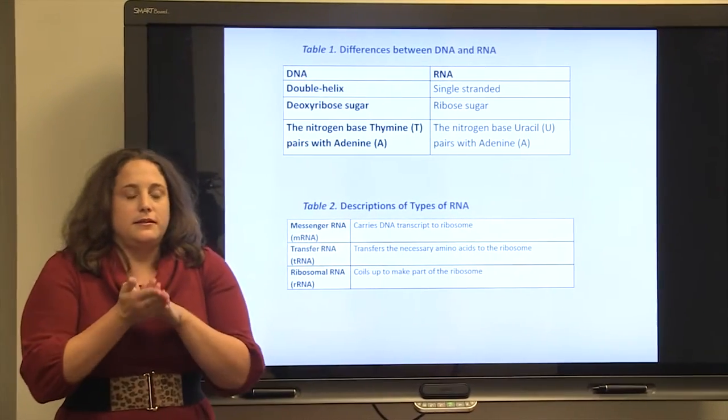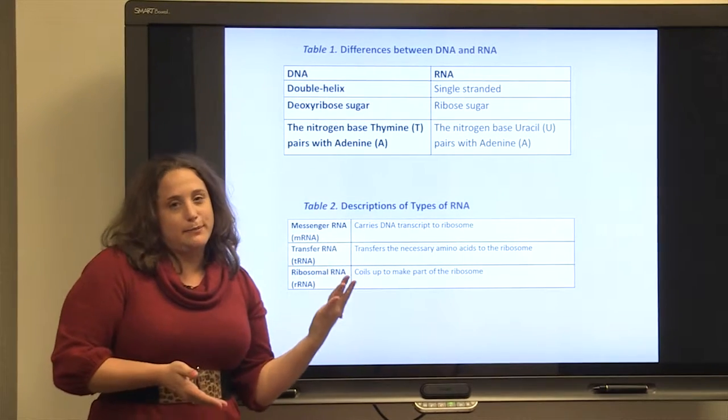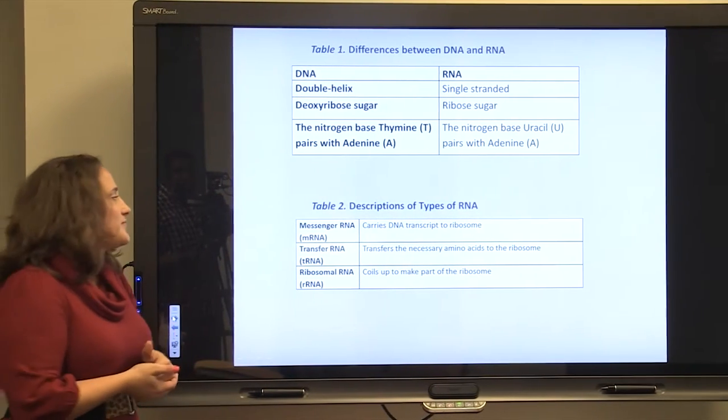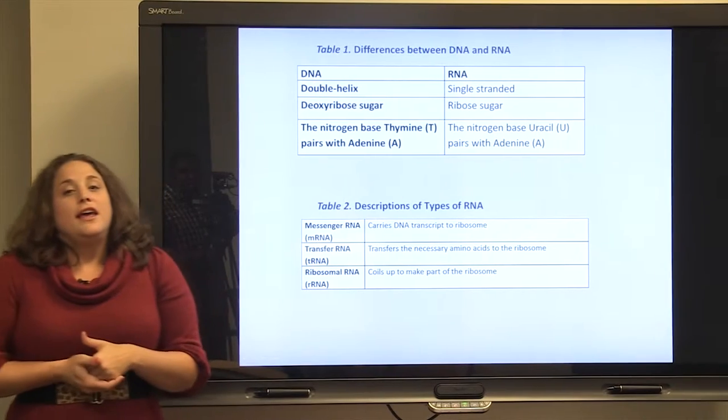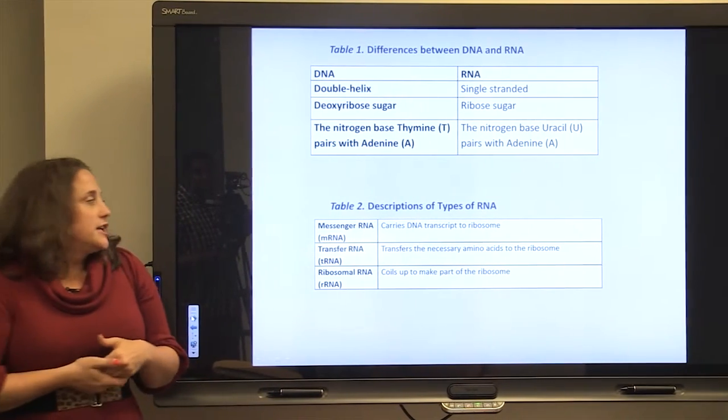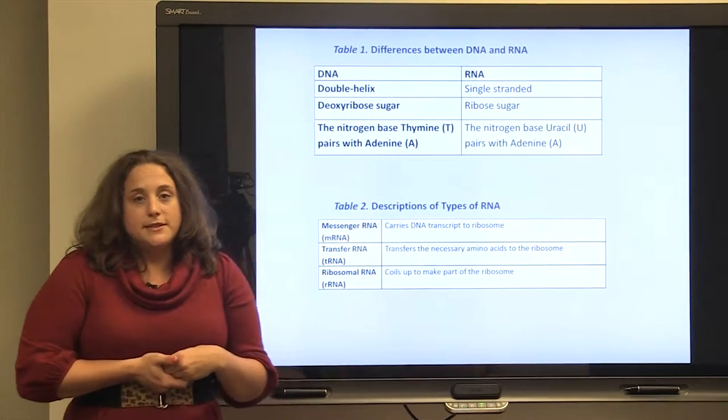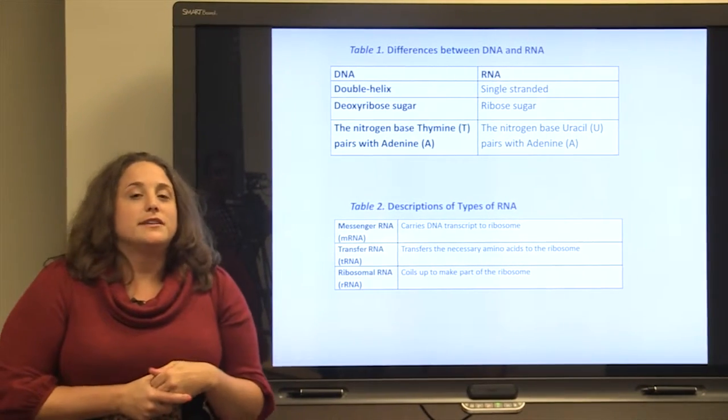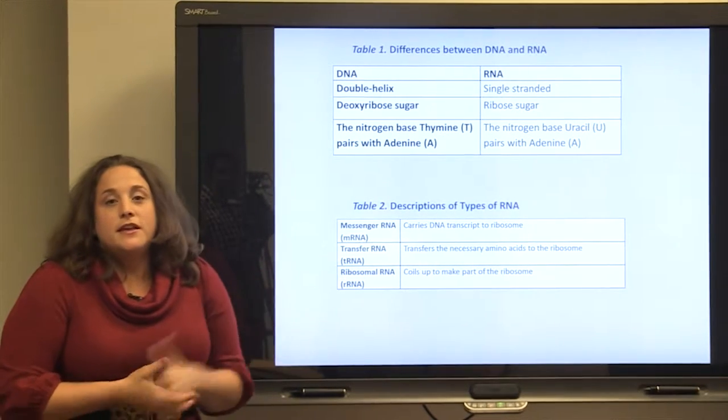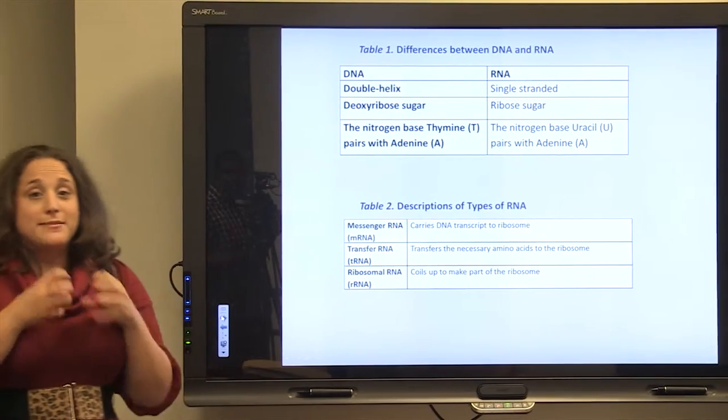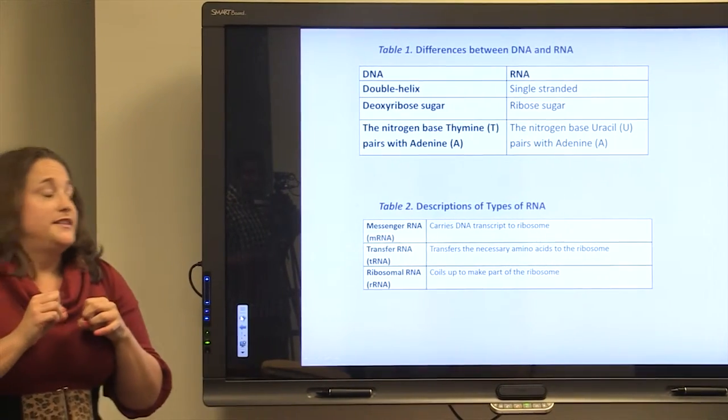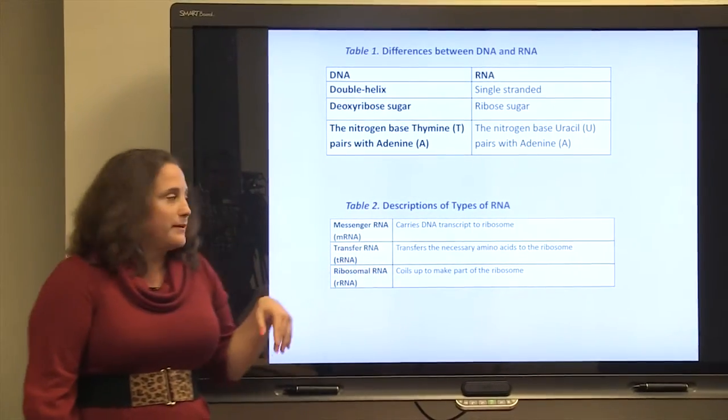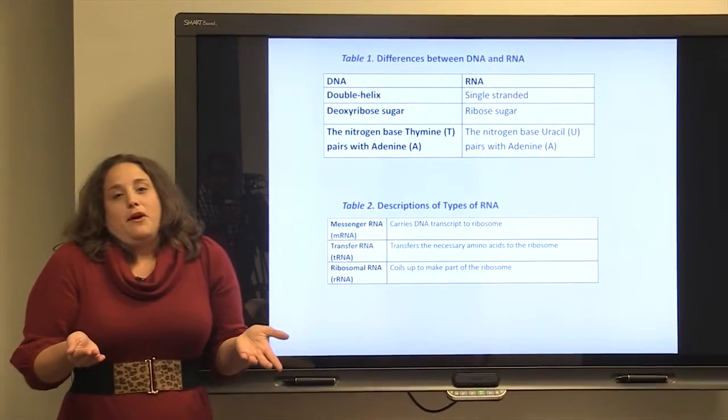Now, to get a little bit more complicated, within RNA there are three types, and they're sort of arranged here by level of importance. Messenger RNA or mRNA carries the message of the DNA transcript from the nucleus to the ribosome. Transfer RNA transfers the amino acids, which are the building blocks of protein, to the ribosome. So remember, amino acids get peptide-bonded together to make a protein at the ribosome. And ribosomal RNA is the easiest one to keep up with because it just coils up to make part of the ribosome.